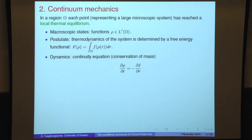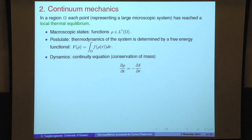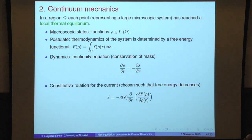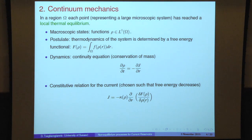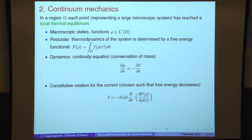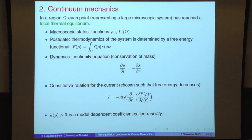The next thing is to put dynamics. To put dynamics, we consider a continuity equation — namely, preserve the density. We are thinking of conservation of mass, and we introduce a current whose integral would make the mass conserved. In order to put physics into this system, we also need a constitutive relation for the current with respect to the free energy. We choose it in such a way that in accordance with the second law of thermodynamics the free energy decreases. In one dimension, I have the gradient of the free energy and I move along this direction. Kappa is a model-dependent coefficient called mobility.